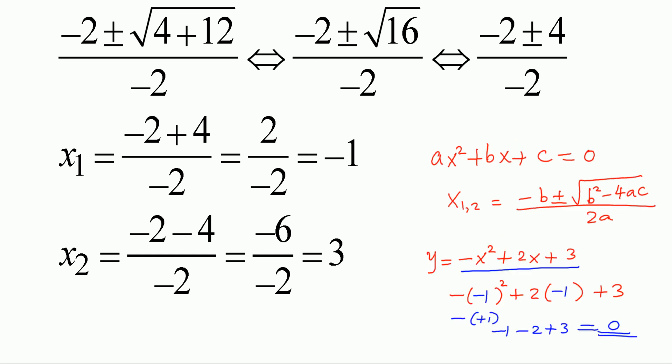Here we have one negative and one positive solution. Sometimes you can rule out solutions involving negative numbers — for example, you know that time cannot be negative. So when you are solving for time and if you get a negative time, you can rule that out. That has application in physics.